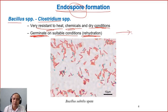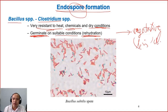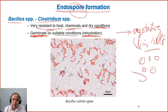The spores germinate into living cells — we call it a vegetative cell, a vegetative or living cell. Then they will multiply in number. Remember, spores do not multiply, but they can survive as spores.